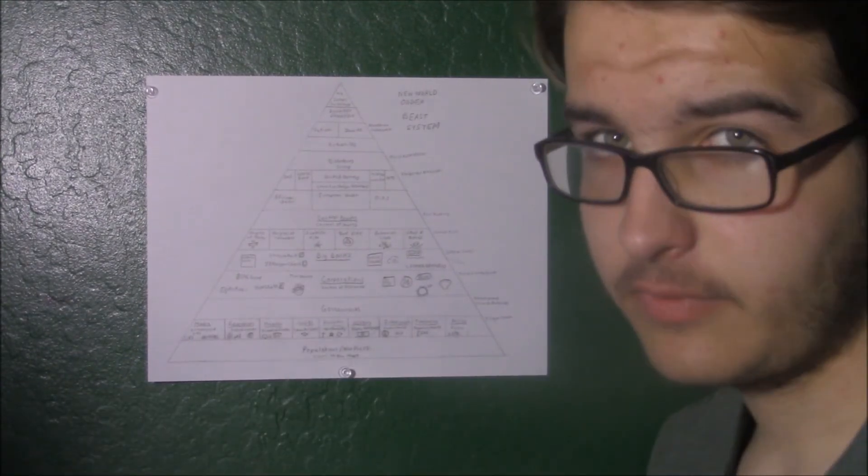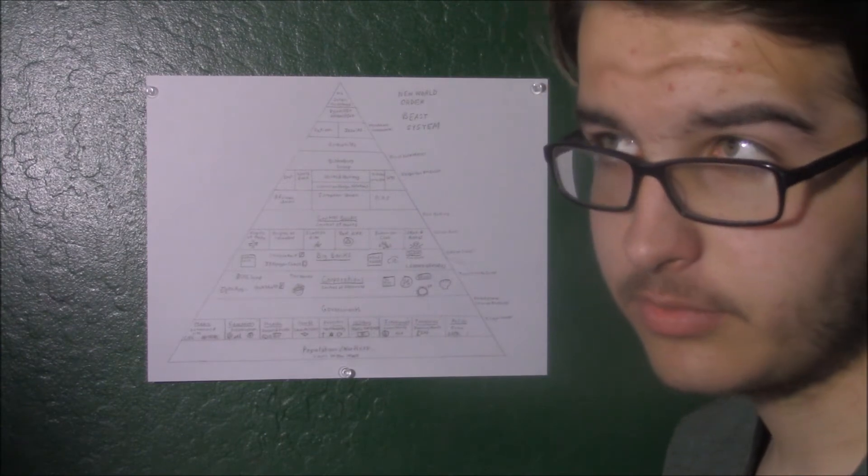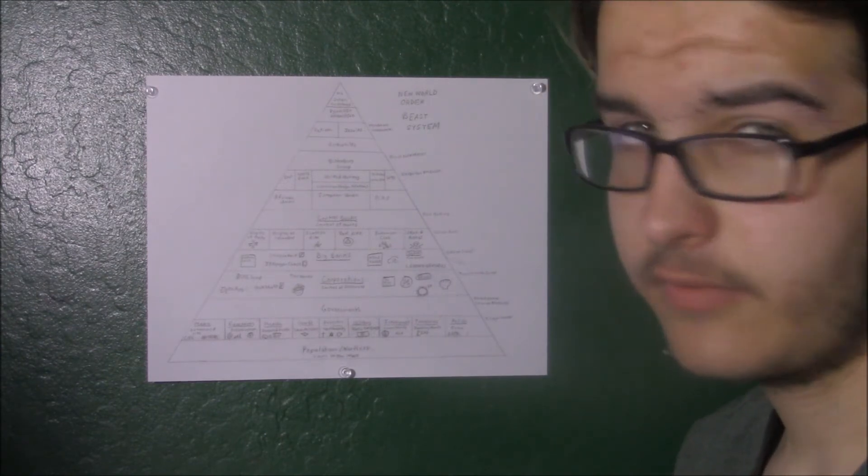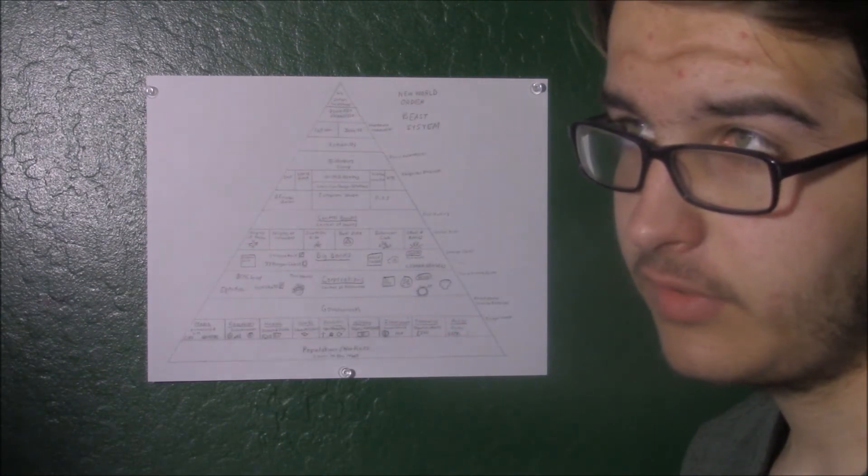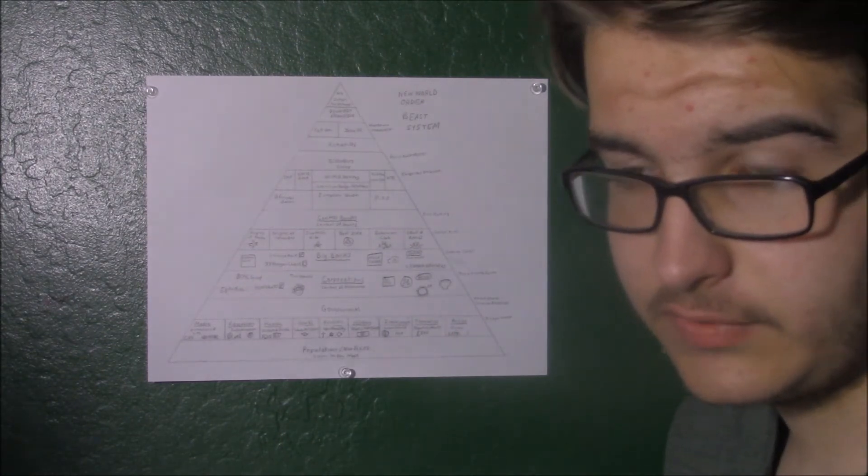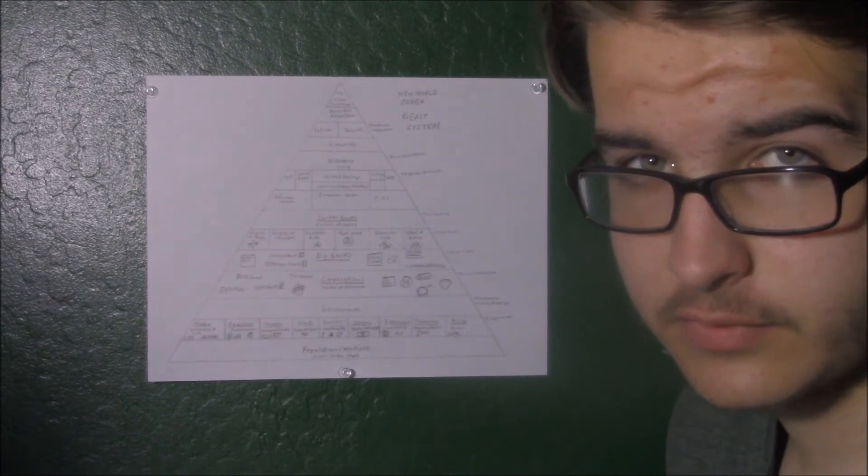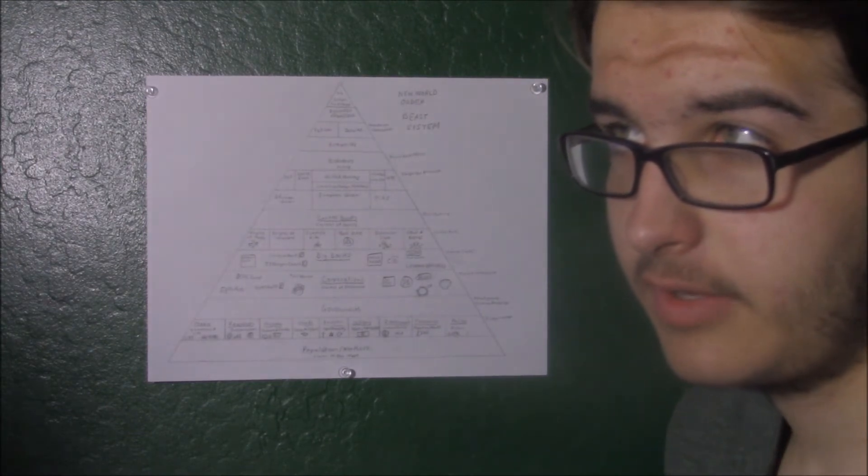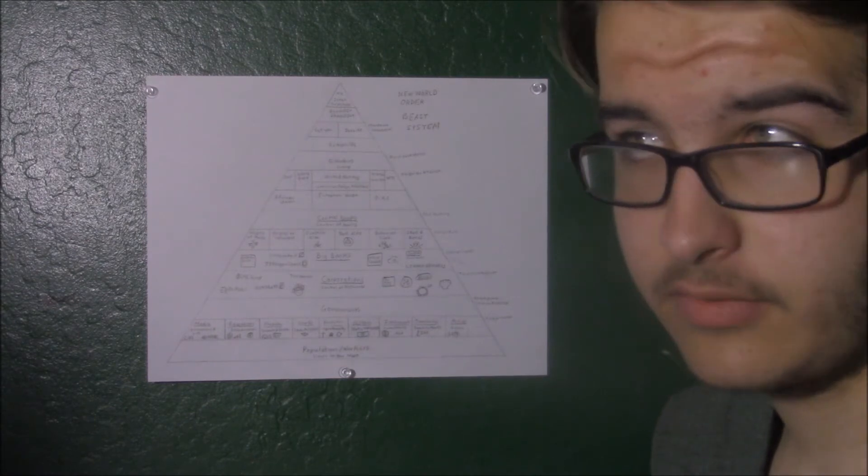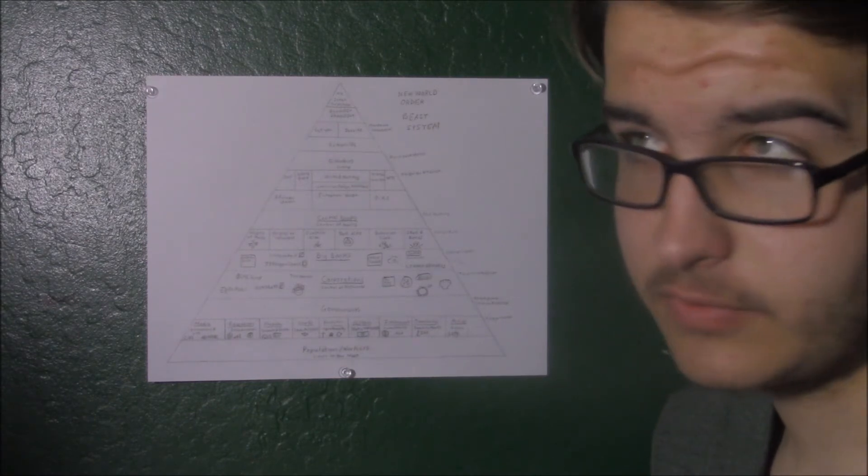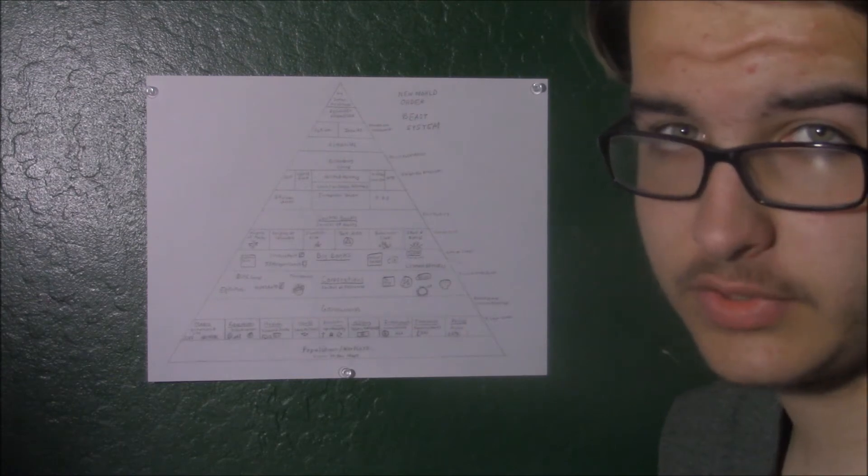Another example of a pharmaceutical corporation or big pharma corporation is Pfizer. They're responsible for the creation of multiple pharmakia, which is the Greek word for poison or sorcery, products like Advil, Xanax, Prevnar which is a vaccine, Zoloft, Viagra, Zithromax, and Lipitor.